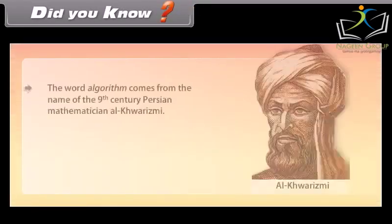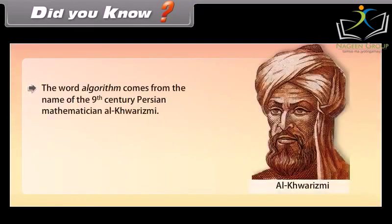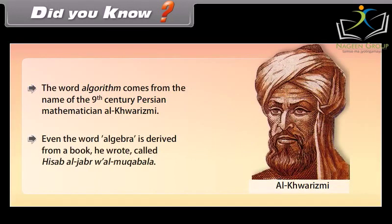Did you know? The word 'algorithm' comes from the name of the 9th century Persian mathematician Al-Khwarizmi. Even the word 'algebra' is derived from a book he wrote called Hissab Al-Jabra Wa Al-Muqawala.